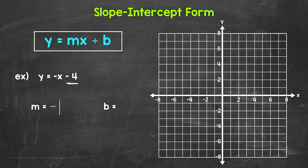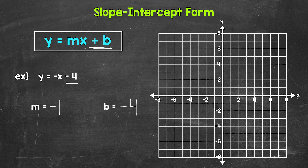So our slope is negative one, and our y-intercept is negative four. You may be thinking, shouldn't we have plus b, plus the y-intercept? Well, instead of writing plus negative four — so adding negative four — the equation has been simplified, so we don't have a double sign. We can just write this as subtraction. We do have the option of rewriting this with addition: y equals negative one x plus negative four. Adding negative four and subtracting four give us the same thing, so either will work.